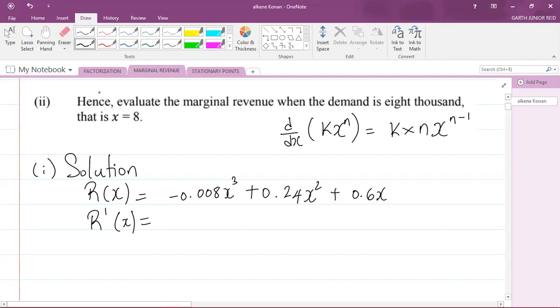Following that rule, we can now differentiate. So I'm going to multiply the negative 0.008 by the power of three. Let's write that down: negative 0.008 multiplied by three, multiplied by x, decrease the power of three by one, so you get three minus one.